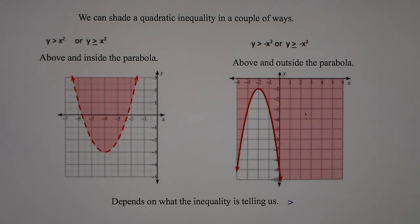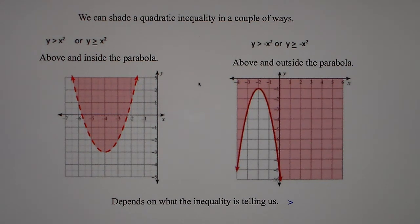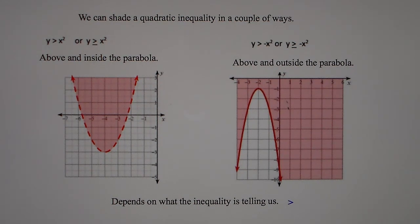y is greater than or equal to negative x squared is still going to be shaded above. So when it's greater than, you're shading above. When y is greater than a positive x squared, it's inside the parabola. When y is greater than a negative x squared, it's outside the parabola, but still above. You'll see more with the examples we're going to be doing in class.